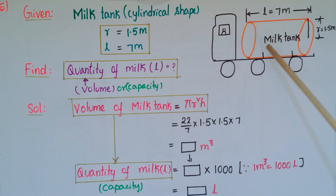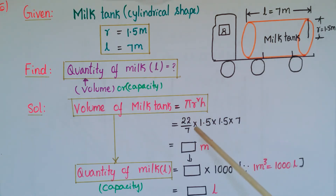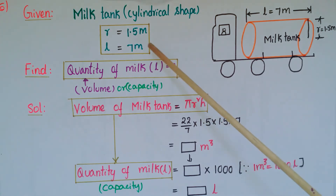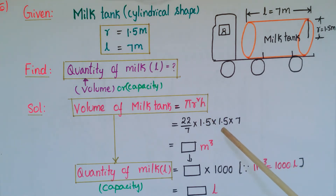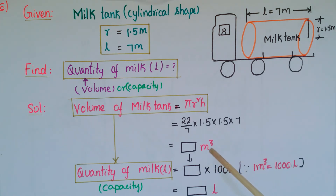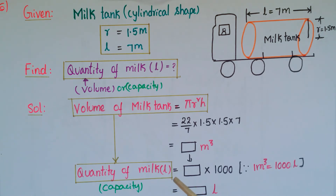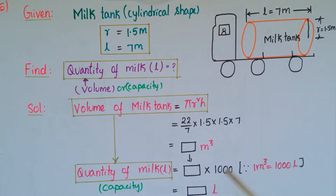The volume of the milk tank equals pi r squared h, since it is cylindrical in shape. That is 22 by 7 into 1.5 into 1.5 into 7, calculated in meter cube. To find the quantity of milk in liters, convert the volume in meter cube to liters by multiplying by one thousand, since one meter cube equals one thousand liters.